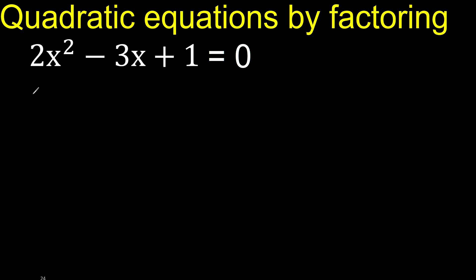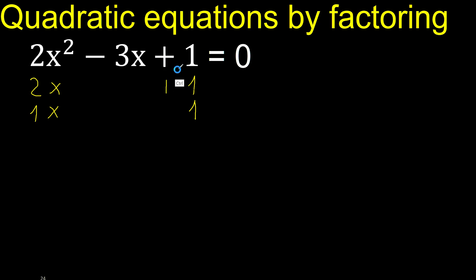2, therefore 2 numbers that multiply is 2. 2 multiplied by 1 is 2x squared, x multiplied by x is x squared. 2 numbers that multiply is 1, 1 by 1 is 1. Plus — plus plus is plus, or minus minus is plus. Let's try minus because here is minus.